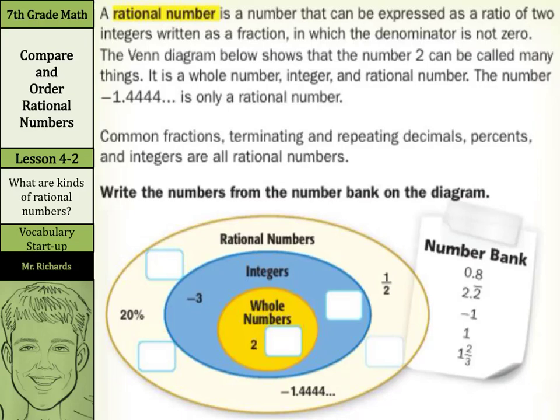A rational number is a number that can be expressed as a ratio of two integers written as a fraction in which the denominator is not zero. Basically, any number that you can write as a fraction, even if it's 2 over 1, is a rational number.